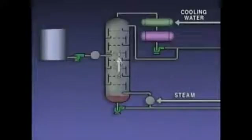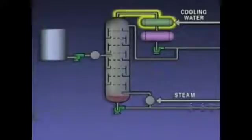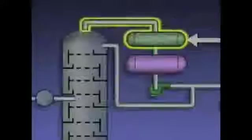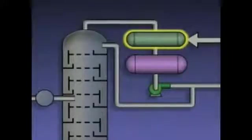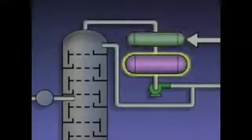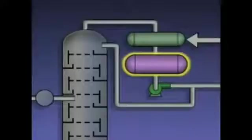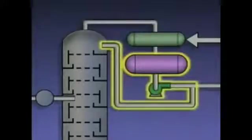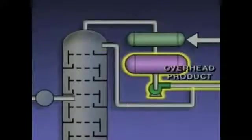The vapors that rise up in the tower are routed to a condenser. The purpose of the condenser is to cool and condense the vapors into liquid. From the condenser, the liquid flows into a receiver or accumulator. The receiver provides a reservoir for the liquid. Part of the liquid from the receiver is pumped back into the top of the tower, and part of it is drawn off as the tower's overhead product.